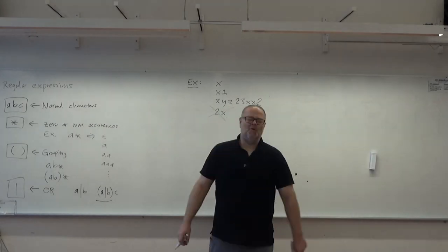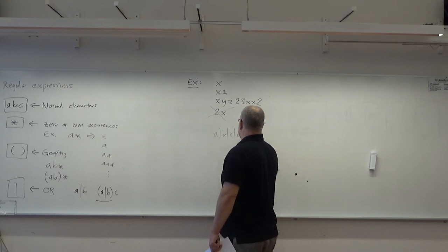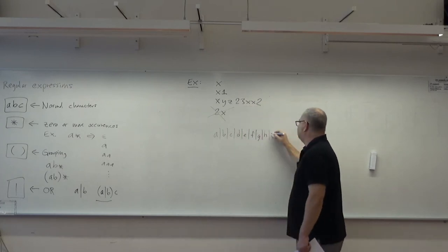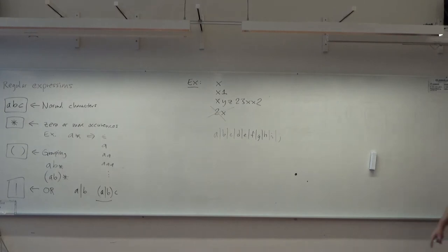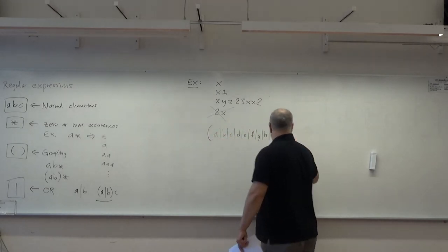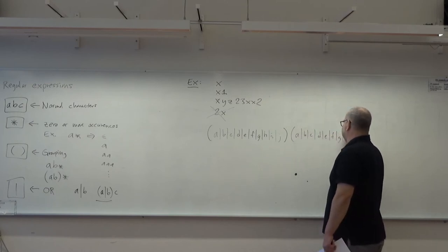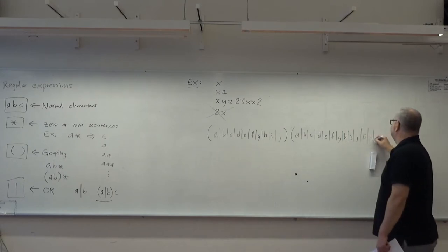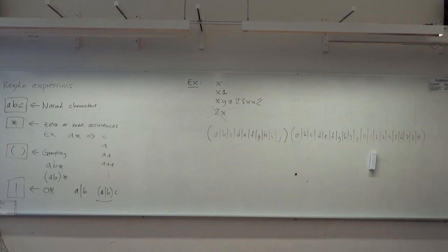We would have to write A or B or C or D or E or F or G or H... all the way through. This would be too annoying, so we have more mechanisms we can use in regular expressions. One thing we can use is macros, similar to macros in the C preprocessor. You can give a name to a part — call it 'letter'. And we say our alphabet ends with J. We don't have any more letters. And we can have a 'digit' macro that is 0 or 1 or 2 ... or 9.